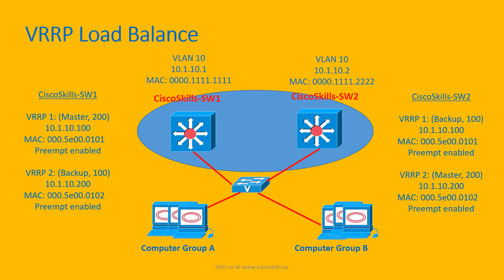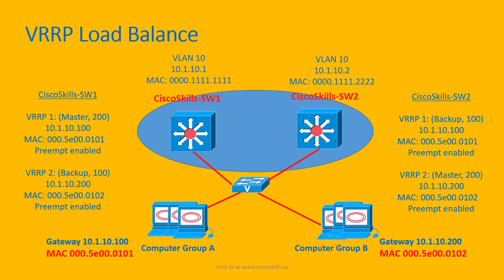Computers in group A are configured with default gateway 10.1.10.100, so all traffic to another network will be sent to Cisco Catalyst Switch1. Computers in group B are configured with default gateway 10.1.10.200 to send all traffic to Switch2. This way, we achieve load balancing for VRRP.